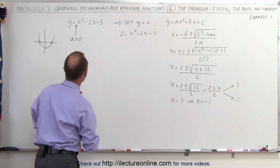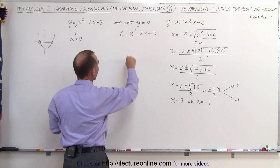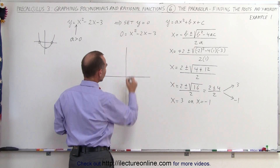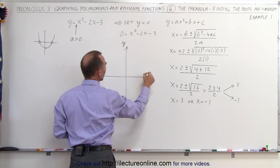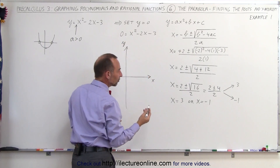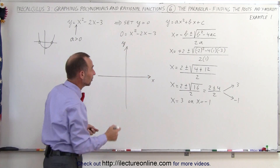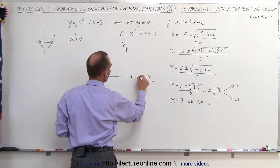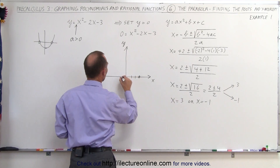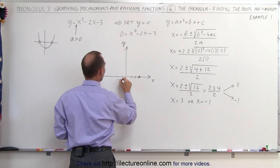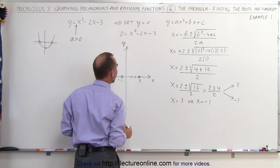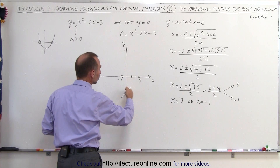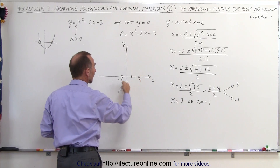Those are the two roots, and we can plot them on the graph. Here's our y-axis and our x-axis. The two places where the graph crosses the x-axis are where x is equal to 3 and where x is equal to negative 1. We also know that the parabola opens upward, so the graph will look something like this.